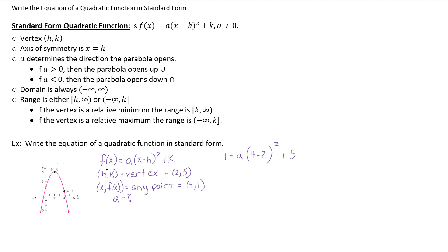So you can see, just from what we're given, we're given everything but a. So ultimately, our first step is to solve for a. And how are we going to do that? We're just going to simplify what we were given. So we have 1 equals a times 4 minus 2 is 2. And then you square that is 4. So a times 4 plus 5.